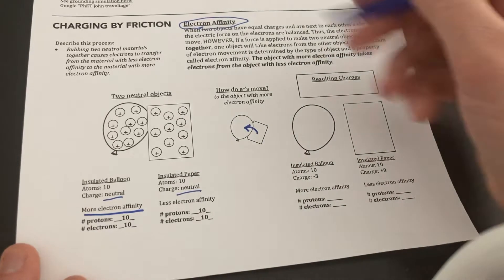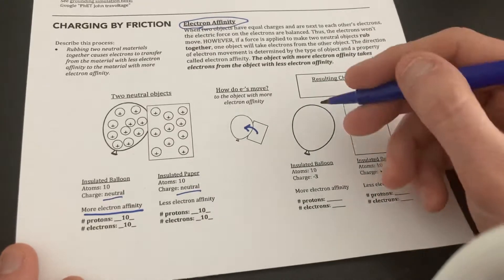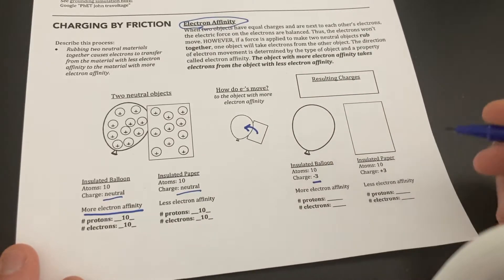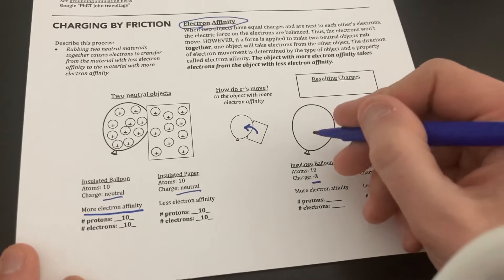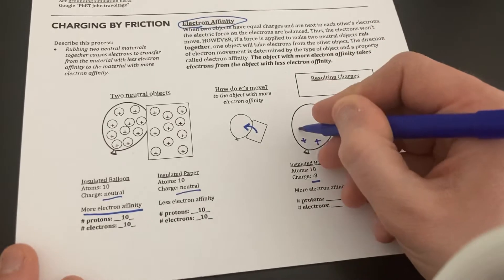All right, now you could have two go over, four go over, three go over. Since this one's ending with the charge of negative three, I'm going to have three electrons go over. So I'm going to actually draw exactly what I had before.